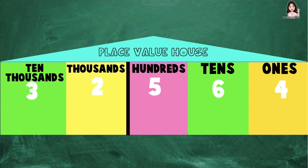So now let's find out the value of each digit. At the ones place, we have 4 ones: 1, 2, 3, 4. So the value of digit 4 at the ones place is 4.